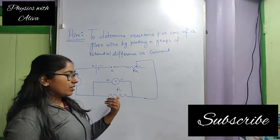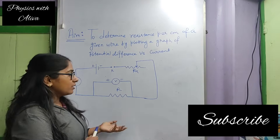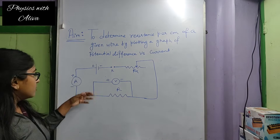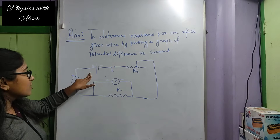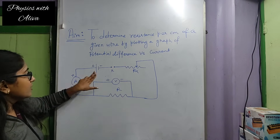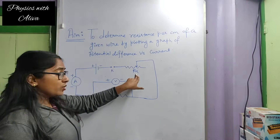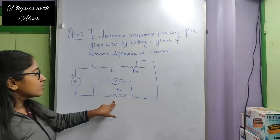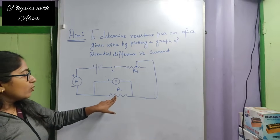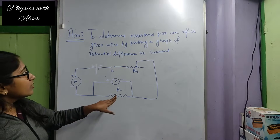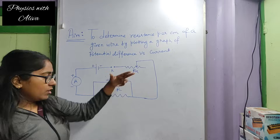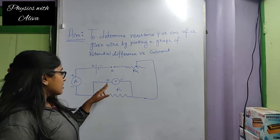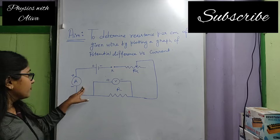At first I am going to discuss this circuit diagram and then we will come to the instrument. This is the battery and this is the key. This will be the rheostat, variable resistance. And this will be the resistance whose resistance per centimeter will be calculated by us. And this is the voltmeter and this is the ammeter.